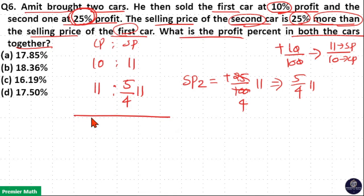10 plus 11 is 21 part. Total cost is 21. Then total sell price is 11 plus 11 into 5 by 4. So 5 plus 4 is 9 is the numerator, denominator is 4 itself. So 9 by 4 of 11 is 11 plus 11 into 5 by 4. This is total cost, this is total sell price.